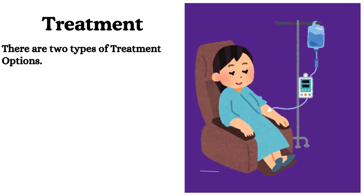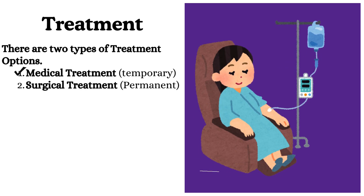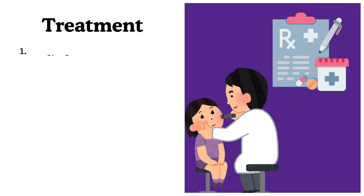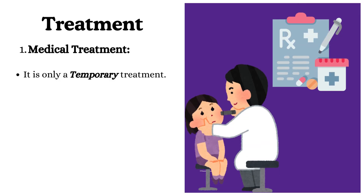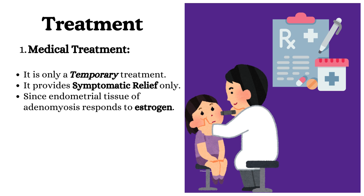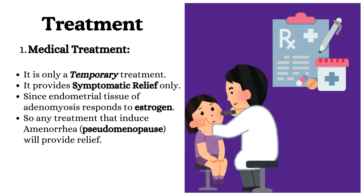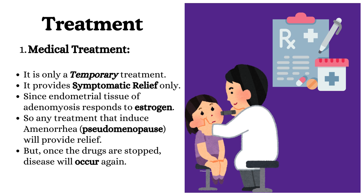There are two types of treatment options: medical treatment, which is temporary, and surgical treatment, which is permanent. Medical treatment is only a temporary treatment providing symptomatic relief only, since the endometrial tissue of adenomyosis responds to estrogen. So any treatment that induces amenorrhea or pseudomenopause will provide relief. But once the drugs are stopped, the disease will occur again.